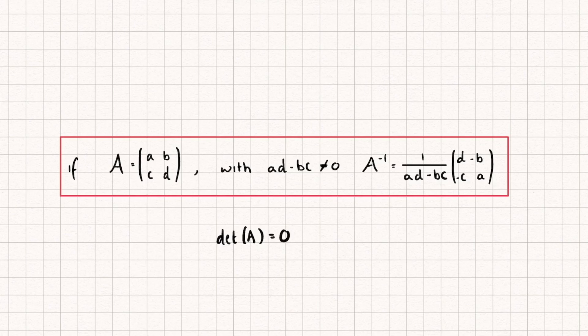And so, because of that, if the determinant of our matrix is equal to 0, this implies that it does not have an inverse, and we call it a singular matrix.